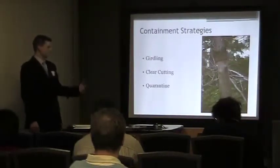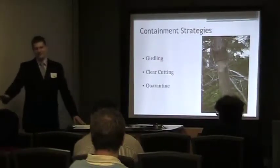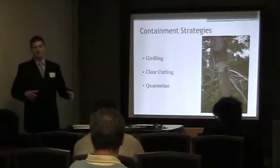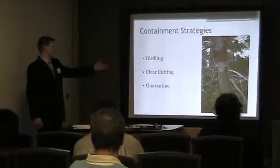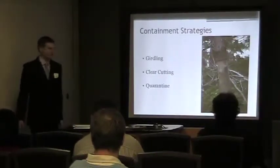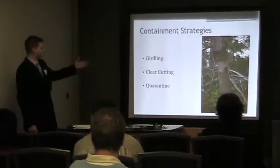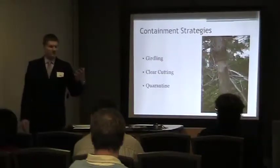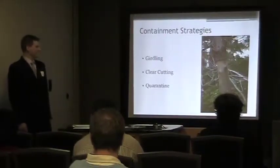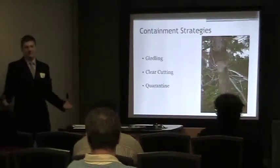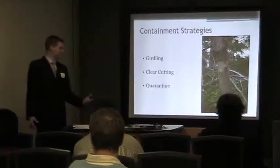Another initial strategy was clear cutting — just removing ash trees, leveling ash tree neighborhoods to prohibit the spread of the insect. Girdling, which I have pictured here, involves removing a section of bark from the tree. This cuts into the wood and disrupts the flow of nutrients through the tree, causing the tree to emit a stress chemical, which is what attracts the emerald ash borer.